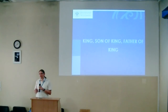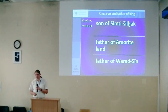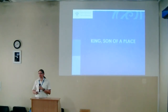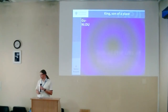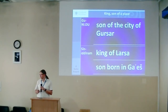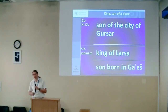There is only one case where a king is described as both son of a king and father of another king: Kudur-Mabuk, who was son of Shimti-Shilhak, father of the Amorite land, and father of Warad-Sin. In two cases we have a king described as son of a place: Gumidu, son of the city of Gursar; and Siddinam, king of Larsa, son born in Gaesh. We know nothing about their father, mother, or family — only the place of origin.